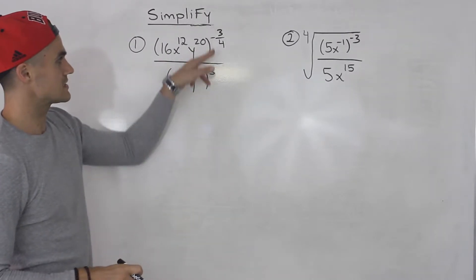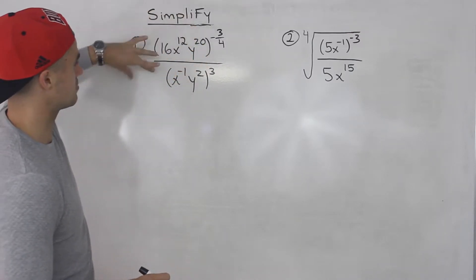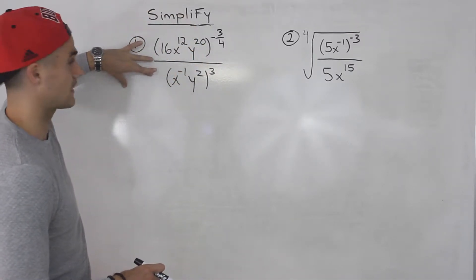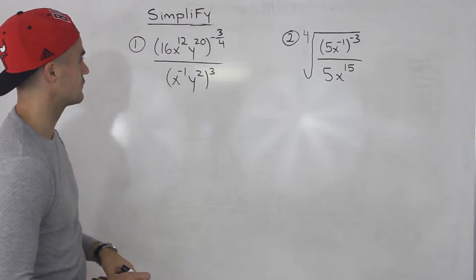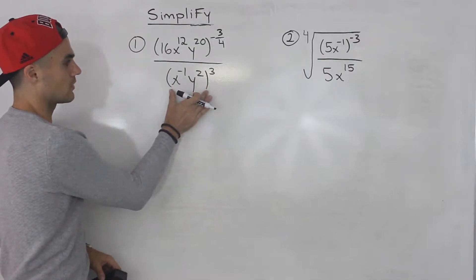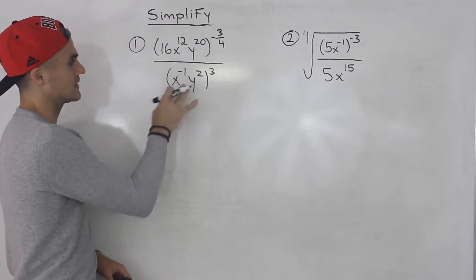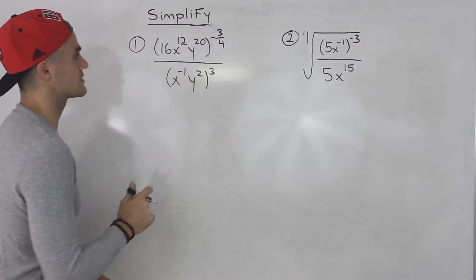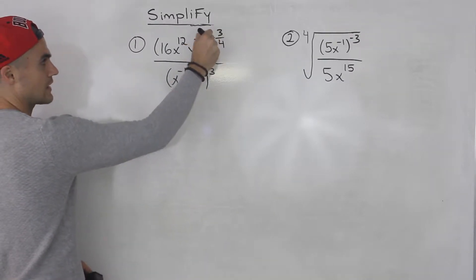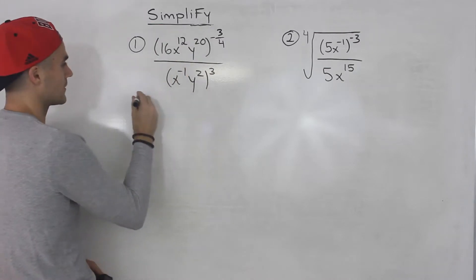Now because this exponent is negative, we could take this whole expression, bring it down to the denominator, and then change that exponent to a positive. But because there's already a lot going on in the denominator, I'm just going to leave it like this and distribute that negative 3 over 4 to all of the components in the bracket.